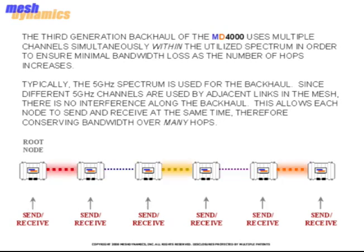The third generation backhaul of the MD-4000 uses multiple channels simultaneously within the utilized spectrum in order to ensure minimal bandwidth loss as the number of hops increases. Typically, the 5 GHz spectrum is used for the backhaul. Since different 5 GHz channels are used by adjacent links in the mesh, there is no interference along the backhaul. This allows each node to send and receive at the same time, therefore conserving bandwidth over many hops.